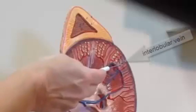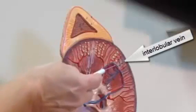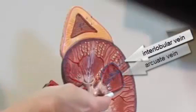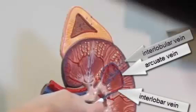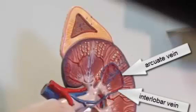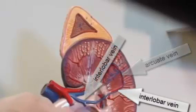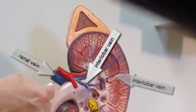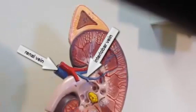Draining from the efferent arteriole, we have the interlobular vein going into the arcuate vein, going into the interlobar vein, and they return all as the interlobar vein into the renal vein. There is no segmental vein.